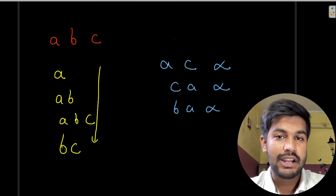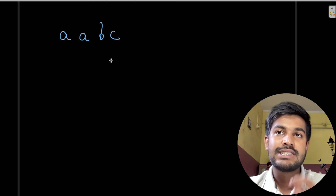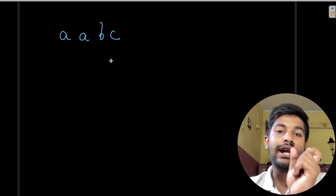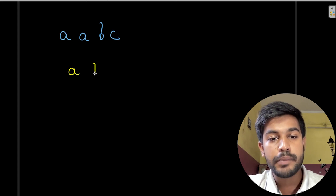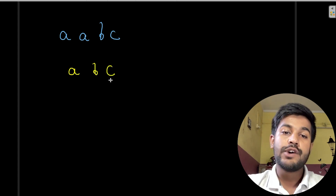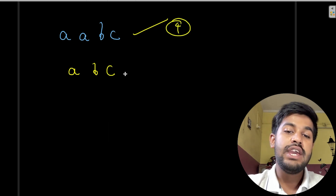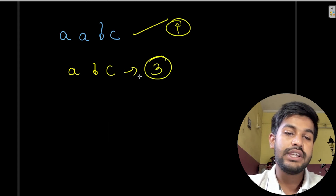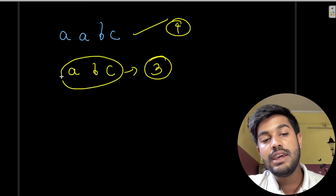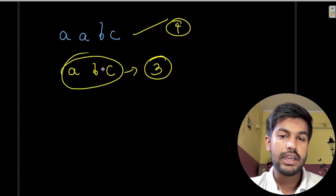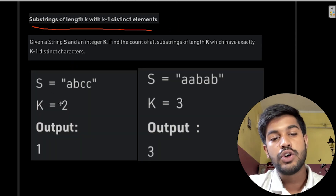The next concept is distinct alphabets. Suppose we have 'aabc' — distinct alphabets means how many different characters are there. Here we have alphabet a, alphabet b, and alphabet c, so in this string of length 4 we have three distinct alphabets: a, b, and c.